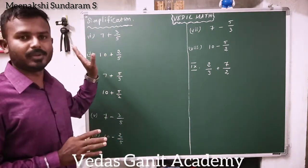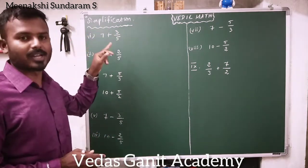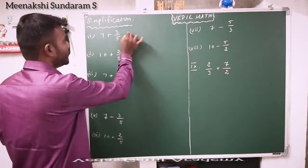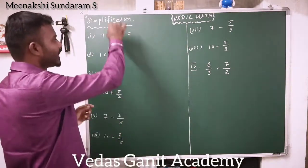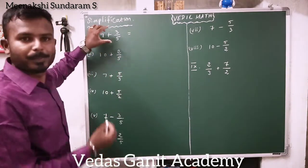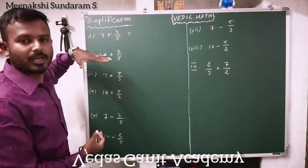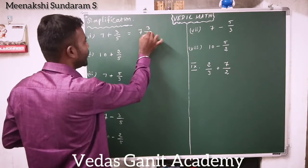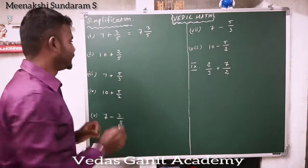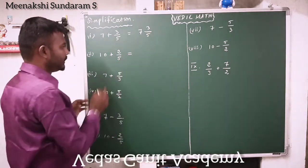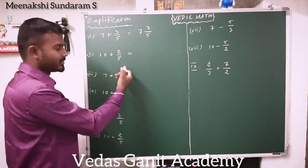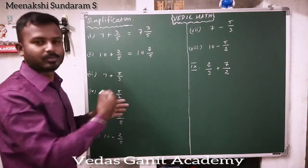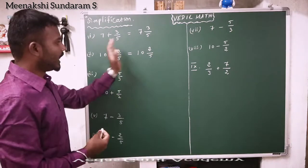Example 1: 7 plus 3 by 5. So there will be a whole number and a rational number. Now we can add a whole number and a rational number. When we are given 7 plus 3 by 5, you can check the rational number — here 3 by 5. It is in a proper fraction form: the numerator above is smaller, the denominator below is larger. So what you are supposed to do? You just write 7 and 3 by 5 as it is. Example 2 is the same: 10 plus 2 by 5 — a whole number plus a proper fraction. You don't need to do LCM or multiplication. Simply just write the whole number and the fraction. That's all.